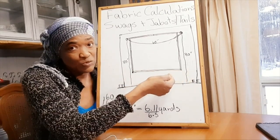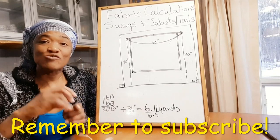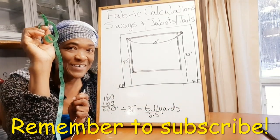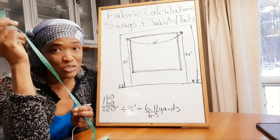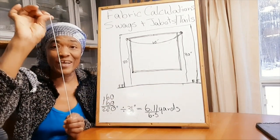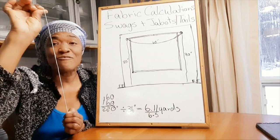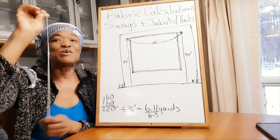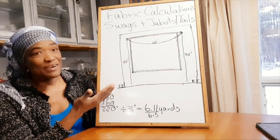Number three: take the string that you cut and use your fabric measuring tape, the measuring tape that you use to measure fabric, to measure your string. Now that's going to be the length of the fabric that you need to make your swag and your tails. For example, here.